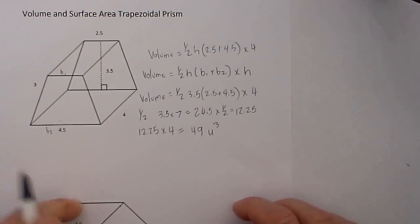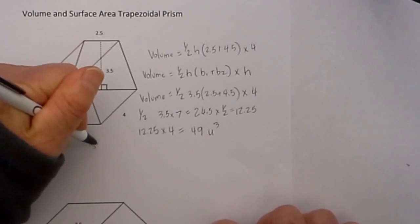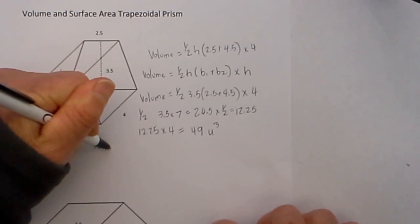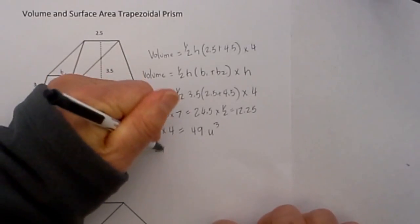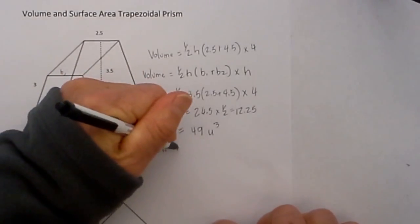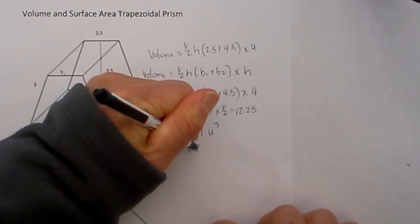Now let's move to surface area. Surface area is a two-step process. You first get the lateral area, and then you add that to two base areas.